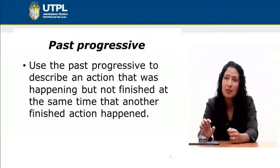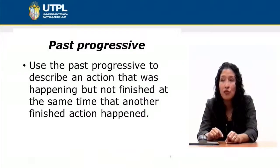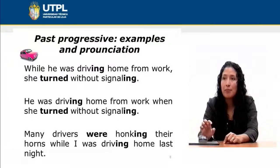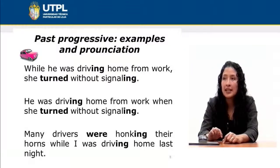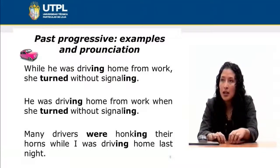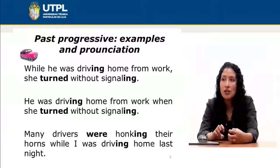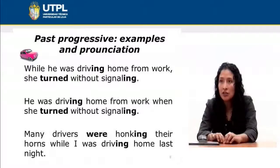But what happens with the past progressive? We use this tense to describe an action that was happening but not finished at the same time that another finished action happened. For example, 'while he was driving home from work, she turned without signaling.' Notice how we combine and pronounce these parts. If you are combining the past progressive with the past tense, try to make sure that pronunciation is a good strategy. Notice the intonation: 'while he was driving home from work — she turned without signaling.'